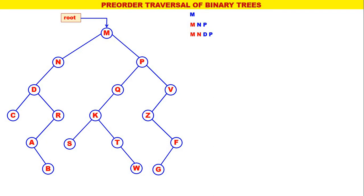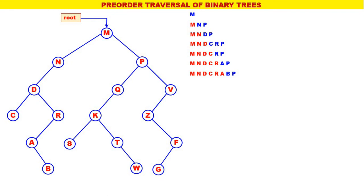Leftmost is d. The pre-order for d — the leftmost is C. The pre-order for C is C only with C processed. Next leftmost is R — the pre-order for R is R, A with R processed. Therefore R is replaced by R, A with R processed. Now the leftmost is A — the pre-order for A is A, B with A processed. Therefore A is replaced by A, B with A processed. Now the leftmost is B — the pre-order for B is B only with B processed.